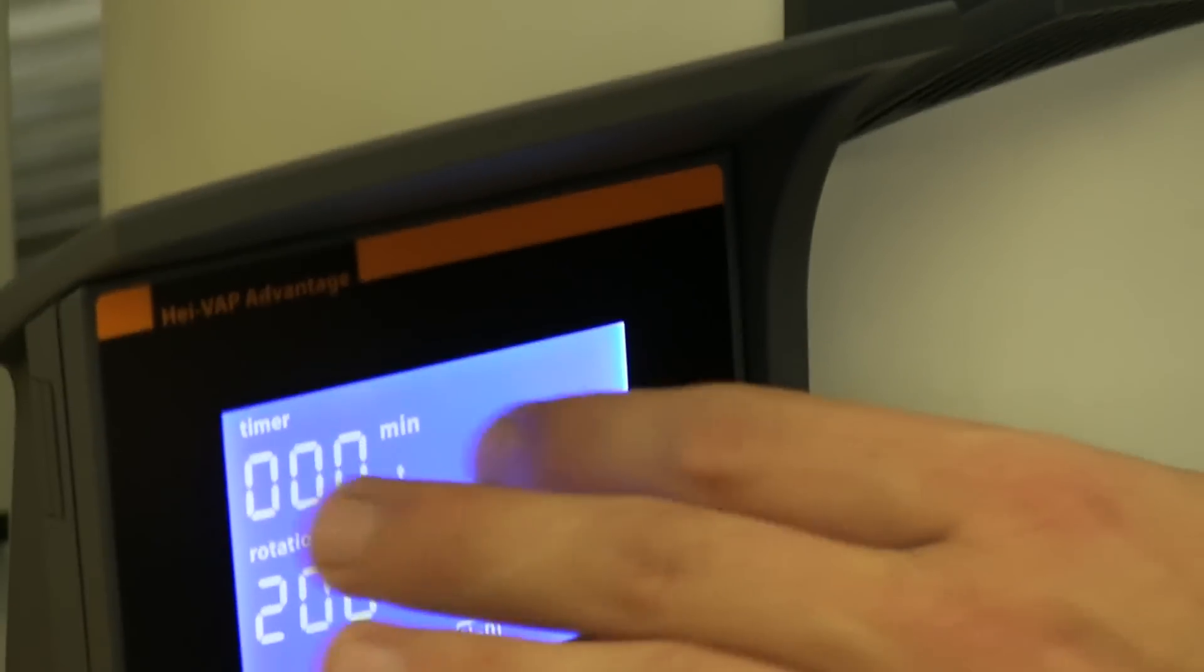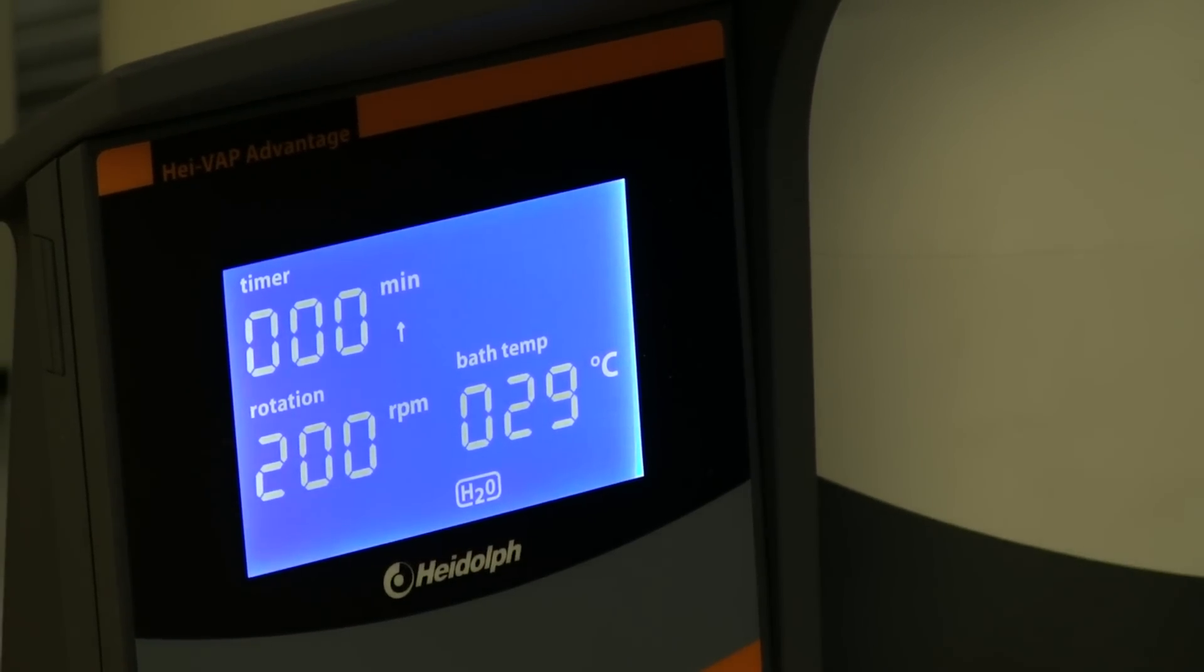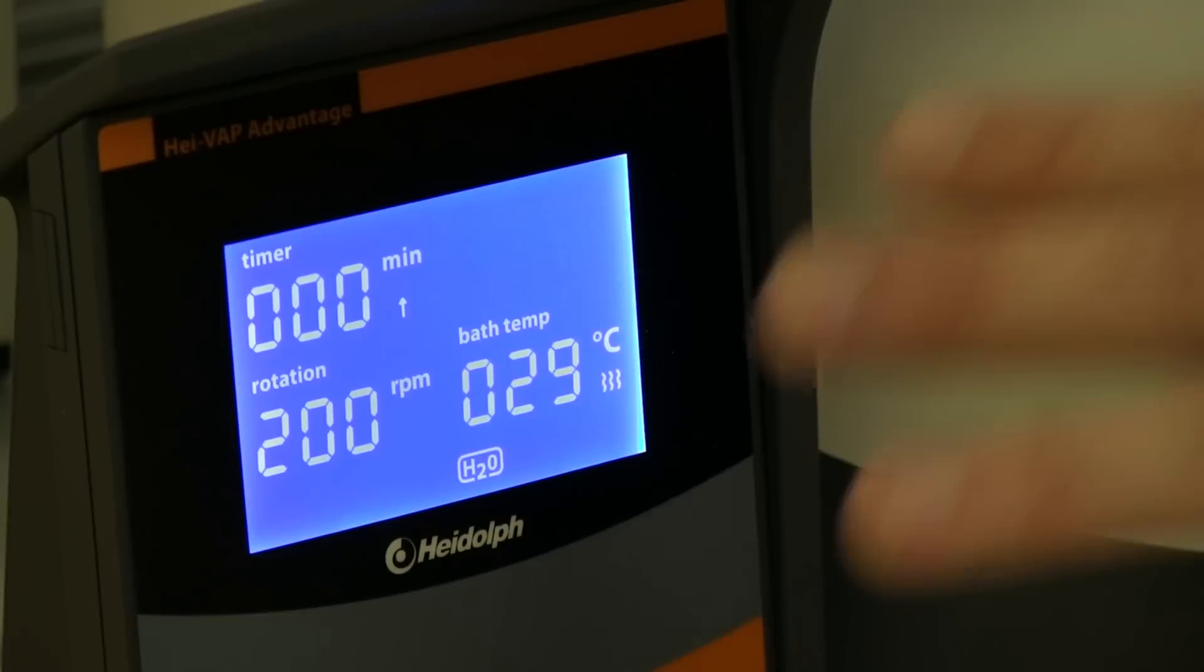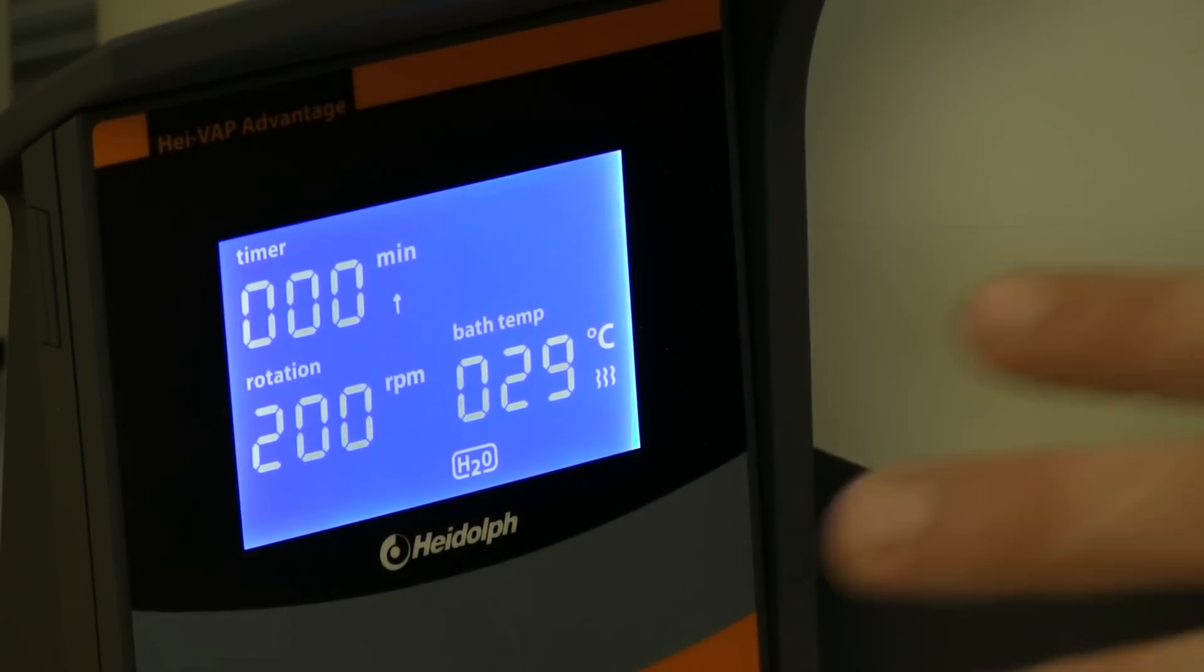We have a timer that if you'd like to have this timed, if you're going to walk away from it and you want to make sure that the whole process doesn't get too far, you can set a timer and the machine will actually stop. We'll still pull vacuum so it's best to not go too far.